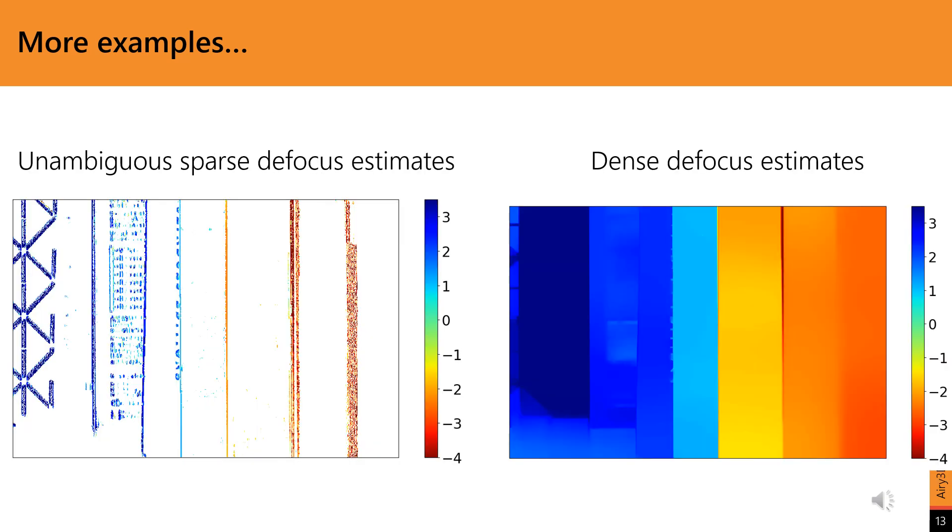On the left is a signed sparse defocus map from a method which combines the pre-post edge estimates with the unsigned defocus estimates from Zuo and Sim's method. We can see from the map that the defocus estimates are decreasing from left to right, implying increasing depth. We apply a very simple strategy to these sparse results to produce the dense map on the right.